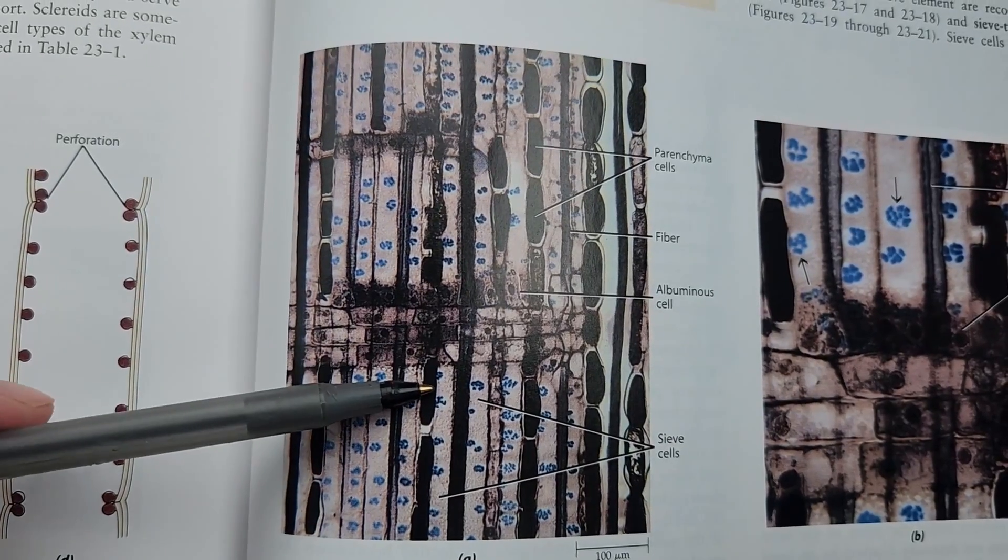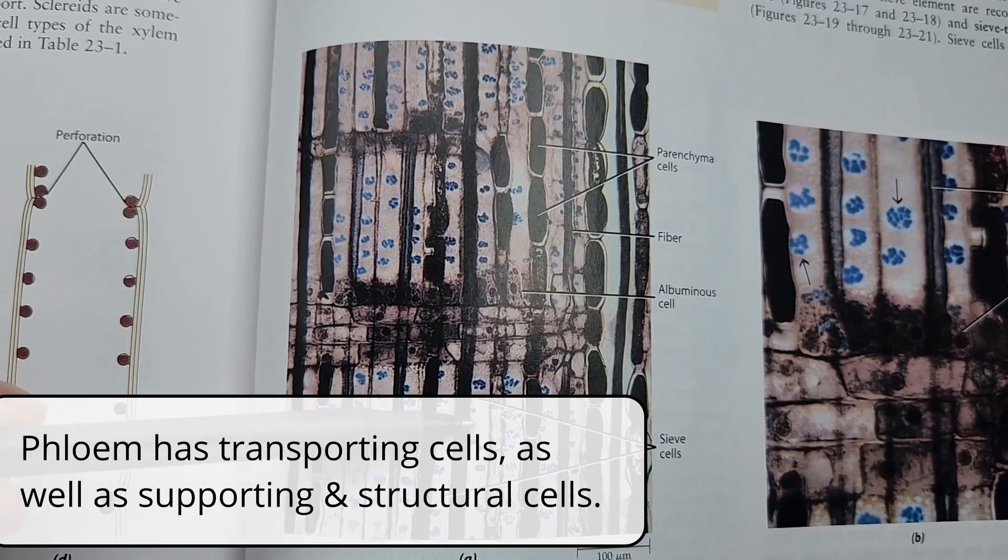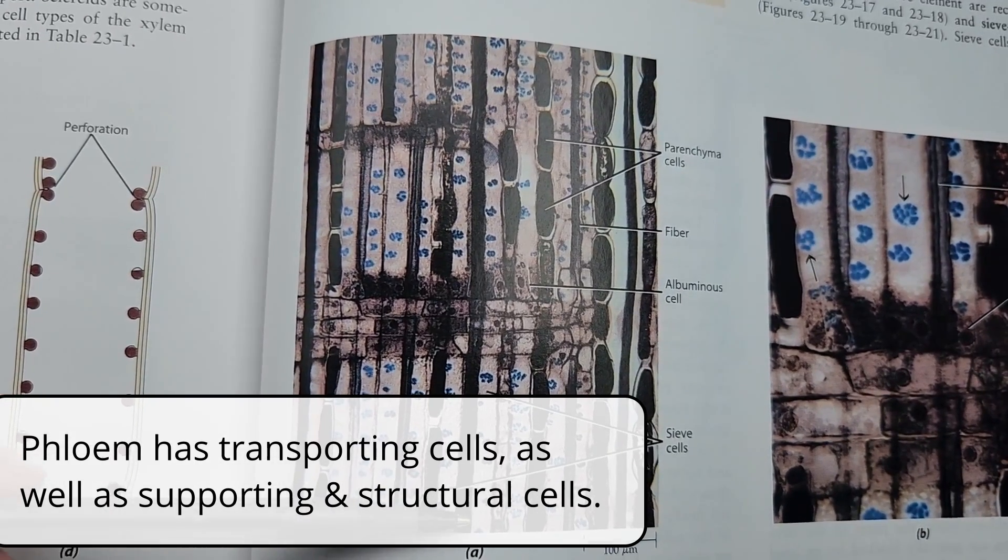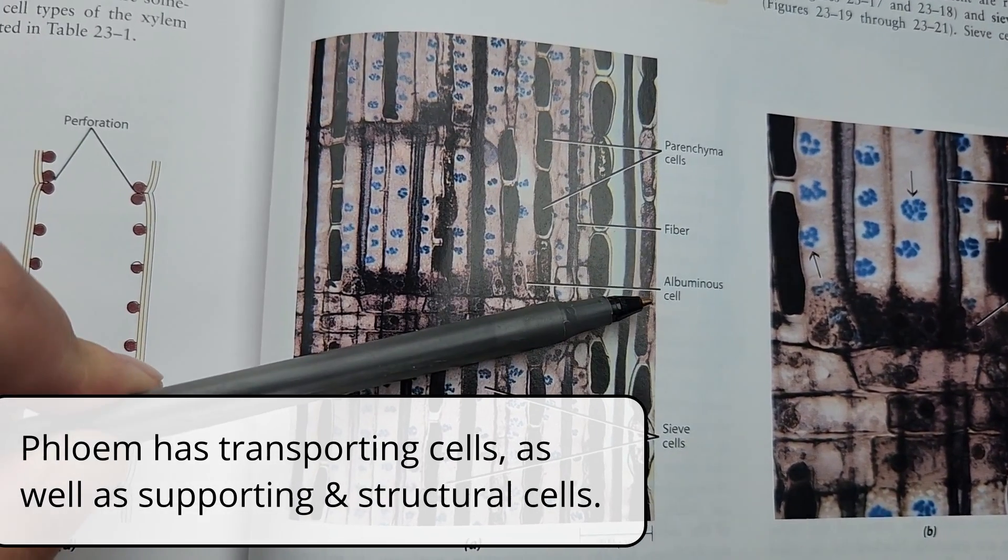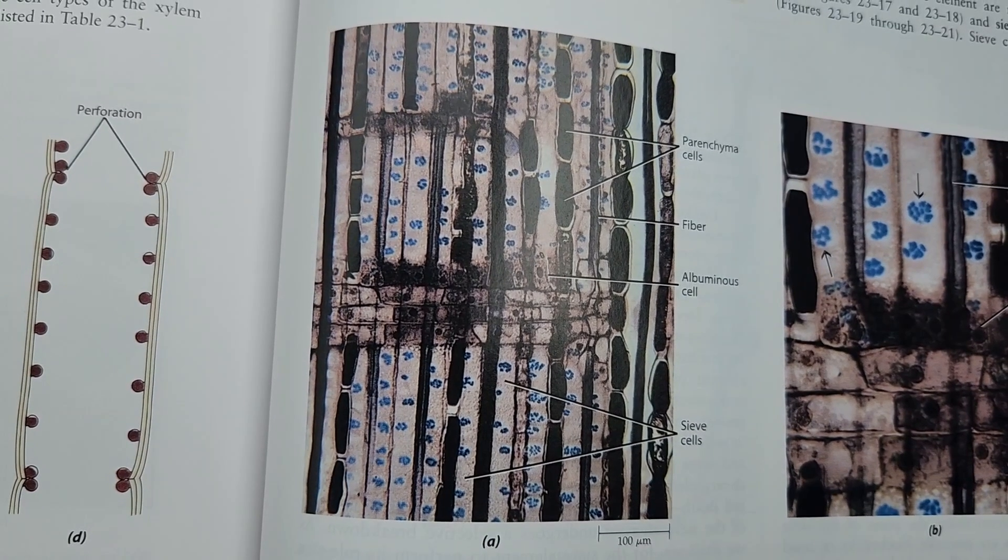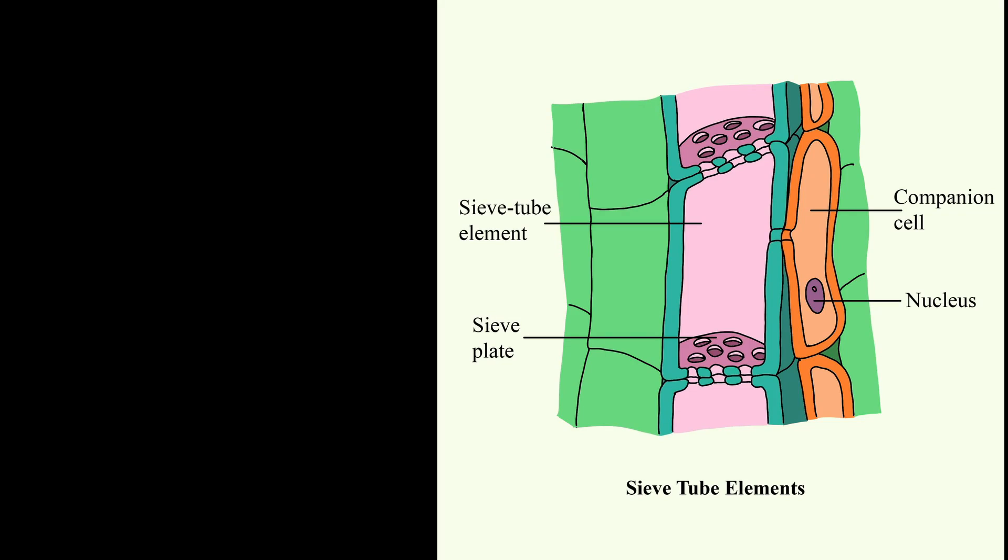So what is phloem made of? Like xylem, there's the cells that are responsible for transporting, and then there's also cells that are just more supporting or more structural. And there's different names in angiosperms and in gymnosperms.